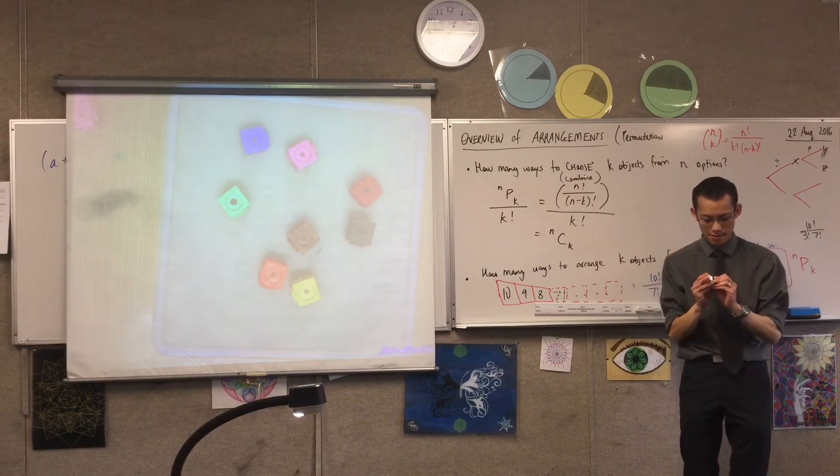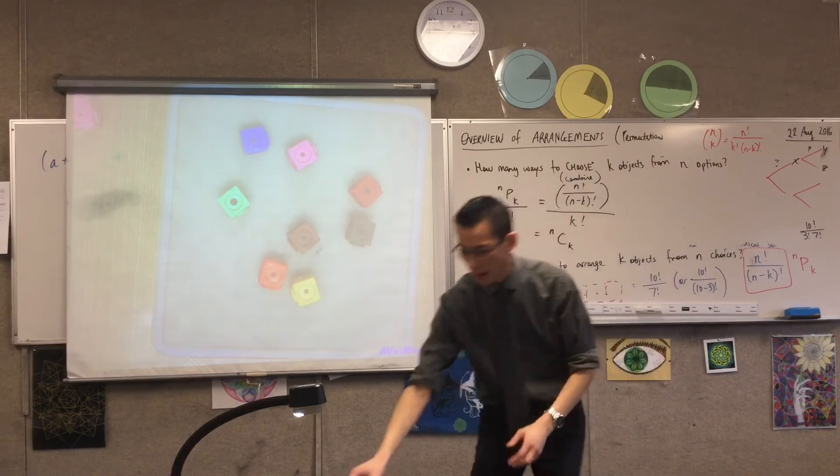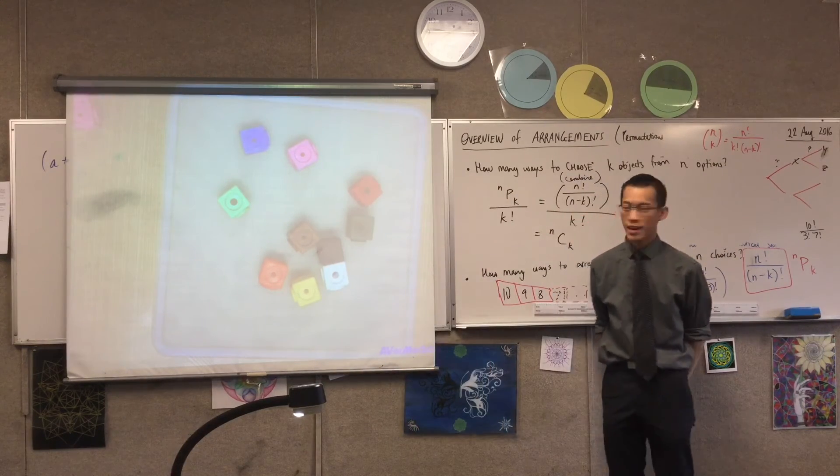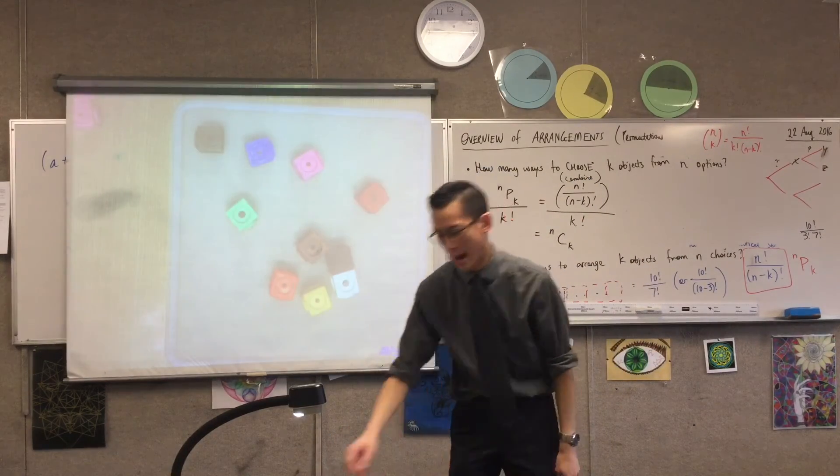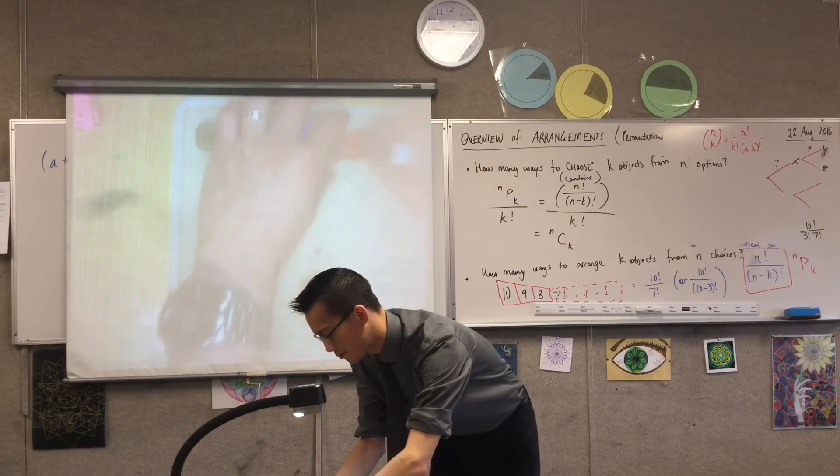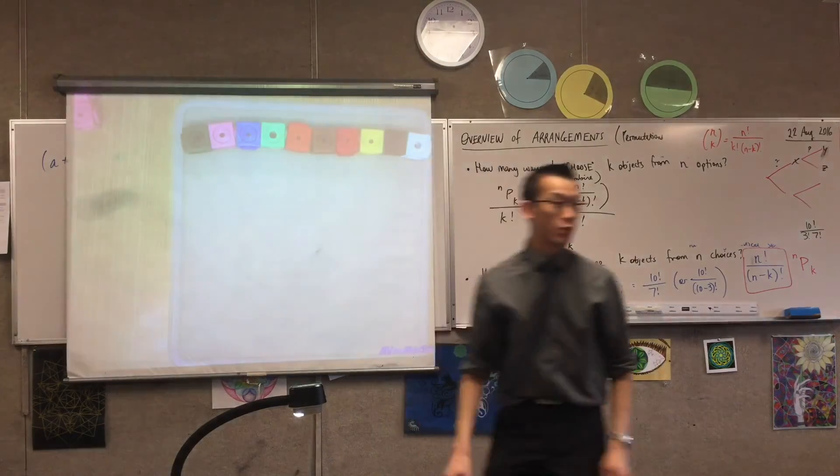Now, this is really cool because you can think about the same principles and how to arrange these guys. If the black and white ones have to sit together, then you're not placing 10 objects anymore, are you? You're actually placing 9. You see it? Here you go. There are my 9 objects. The first one, I have 9 to choose from. And then I've got 8. And then eventually, I get an order. So, that was 9 factorial ways.